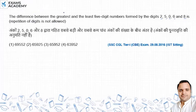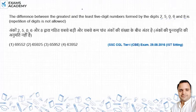There are two numbers — one is the greatest and the other is the least — and both are five-digit numbers. The digits are 2, 5, 0, 6, and 8. Repetition is not allowed, and we need to find the difference between the greatest and smallest number.